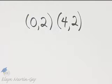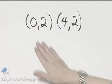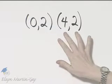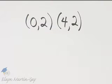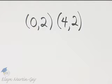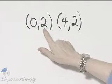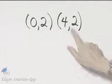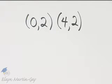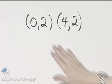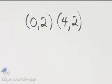To find the slope of this line, notice I wrote down two ordered pair solutions that were along the line. Any ordered pair that has a y value of 2 will be on that line, and here are two that I chose.